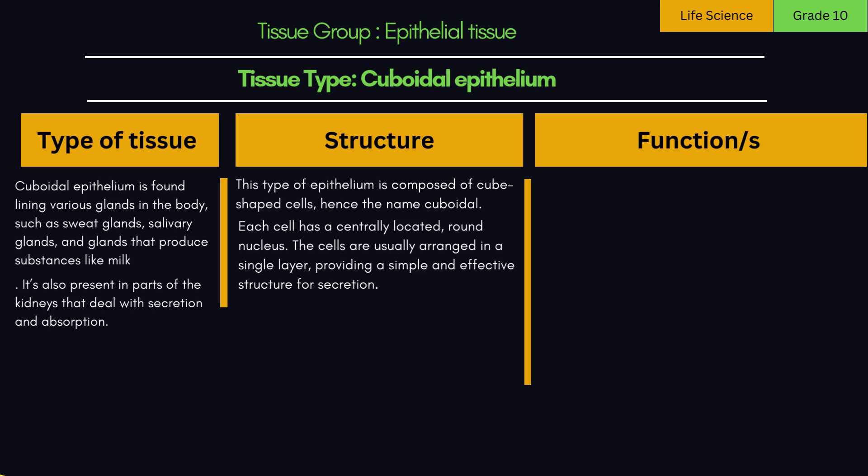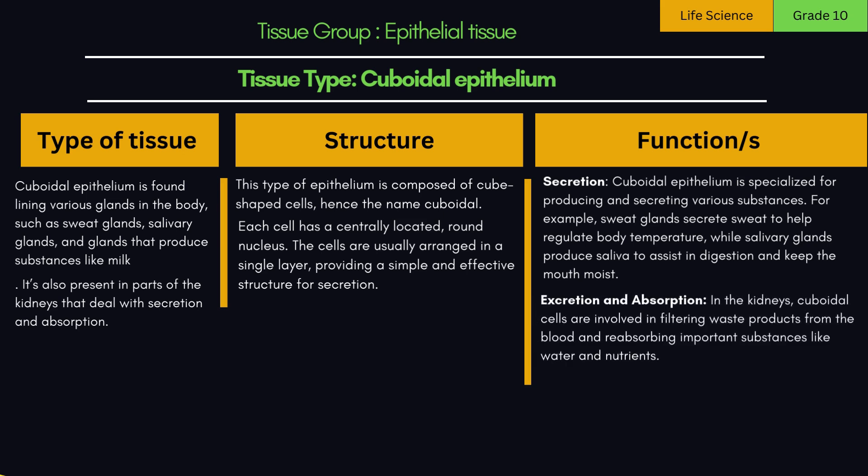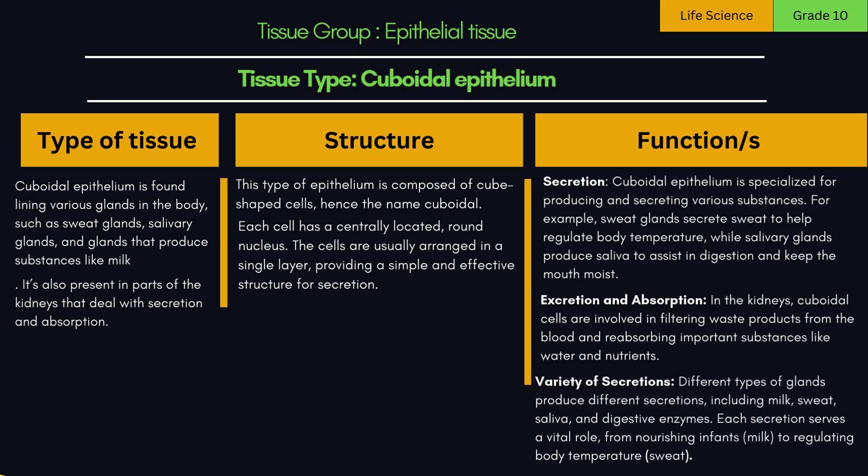Functions of cuboidal epithelium: 1. Secretion — cuboidal epithelium is specialized for producing and secreting various substances. For example, sweat glands secrete sweat to help regulate body temperature, while salivary glands produce saliva to assist in digestion and keep the mouth moist. 2. Excretion and absorption — in the kidneys, cuboidal cells are involved in filtering waste products from the blood and reabsorbing important substances like water and nutrients. 3. Variety of secretions — different types of glands produce different secretions, including milk, sweat, saliva, and digestive enzymes. Each secretion serves a vital role, from nourishing infants to regulating body temperature.